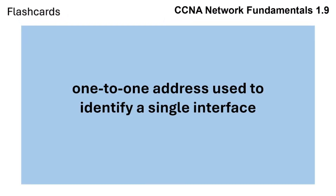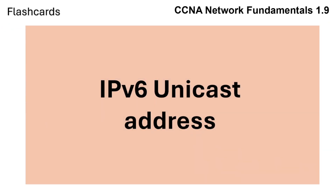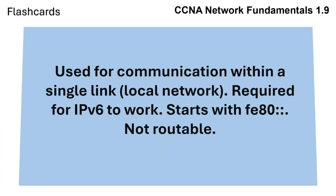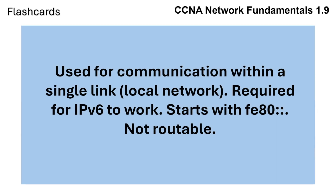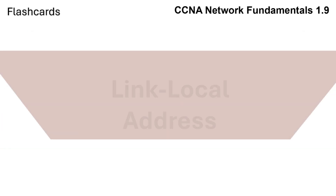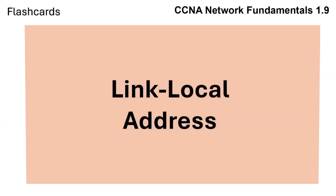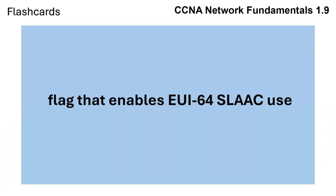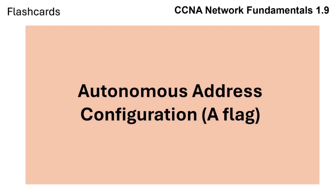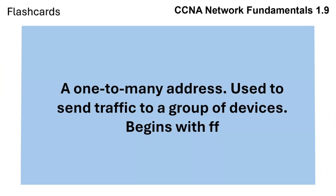Review: Unicast is a one-to-one address used to identify a single interface. Link Local is used for communication within a single link — required for IPv6 to work, starts with FE80, and is not routable. Multicast is a one-to-many address used to send traffic to a group of devices, and begins with FF.